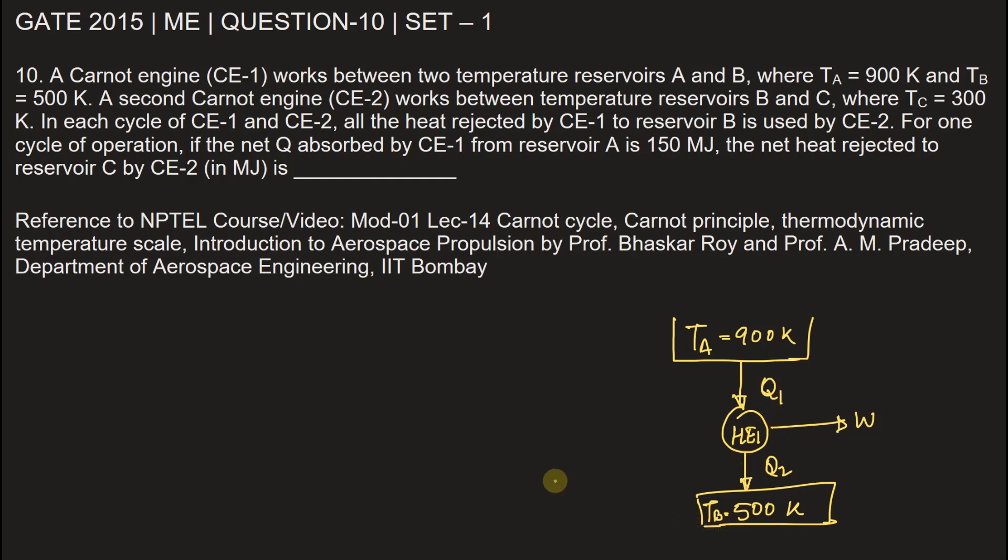Now there is another heat engine between reservoir B and reservoir C. C is at a temperature TC equal to 300 Kelvin. In between this there is a heat engine HE2, work done is W. The heat rejected by this heat engine is Q3 and heat gained by this heat engine will be Q2, rejected will be Q3.